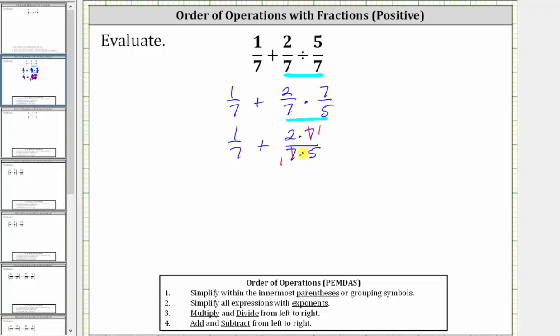Now the only common factor between the numerator and denominator is one. And therefore we can multiply knowing the product will be in simplified form. So now we have 1 seventh and then plus two times one over one times five, which gives us two fifths.